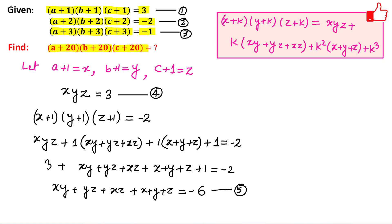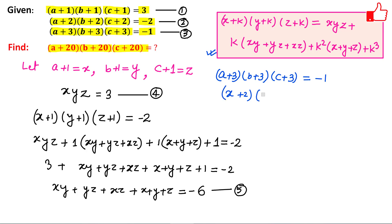Now let us consider the third equation: (a+3)(b+3)(c+3) = -1. Converting to x, y, z: since a+1=x, a+3 = x+2. So this becomes (x+2)(y+2)(z+2) = -1.